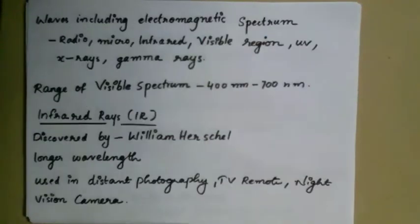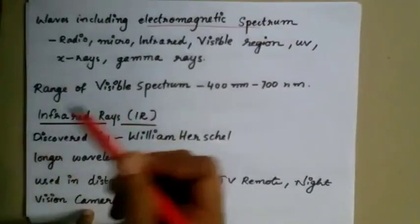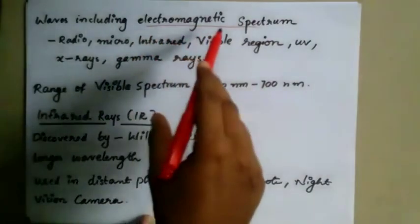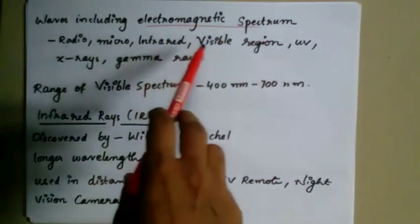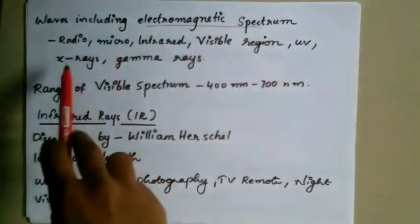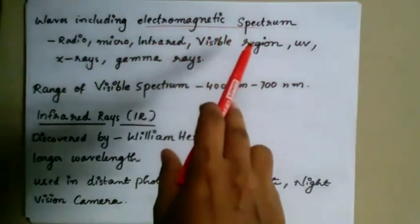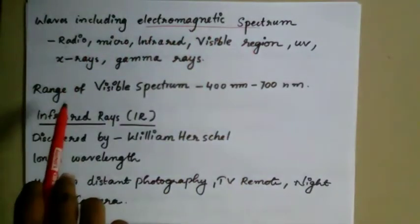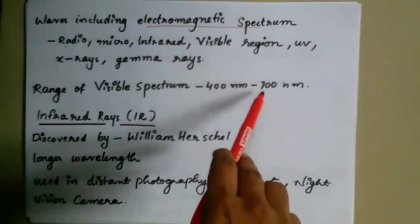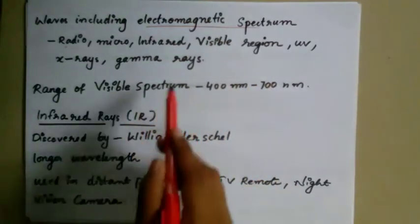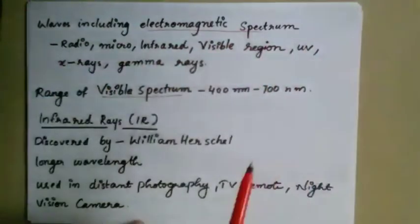Let's look at the electromagnetic spectrum. The electromagnetic spectrum includes radio waves, microwaves, infrared, the visible region, UV rays, X-rays, and gamma rays. The visible spectrum ranges from 400 nm to 700 nm. This is one part of the broader electromagnetic spectrum.